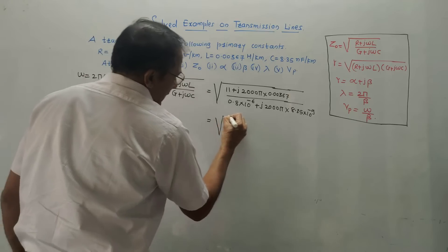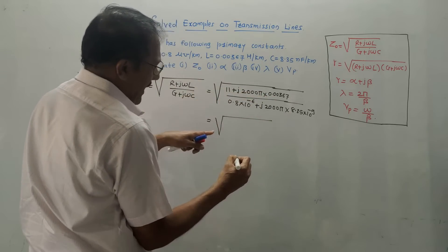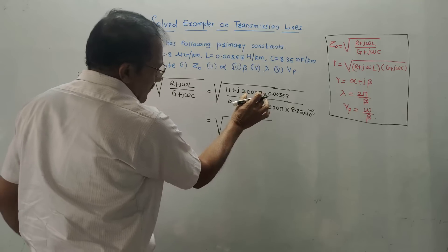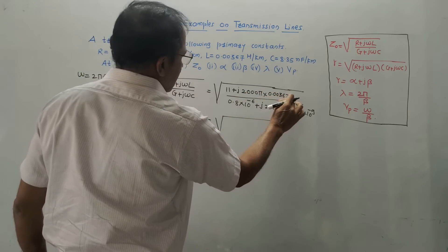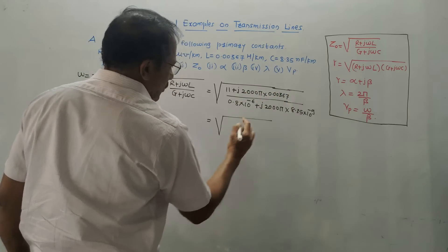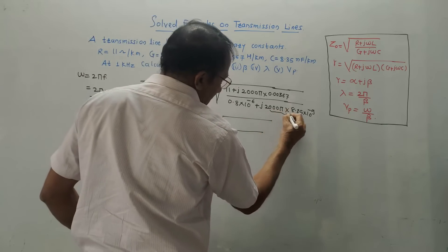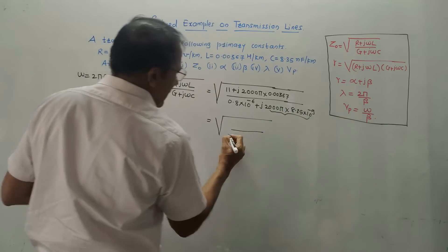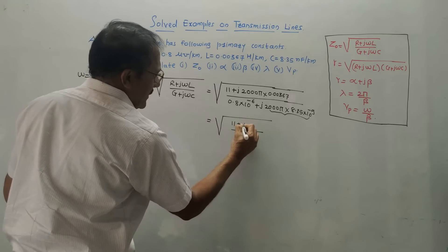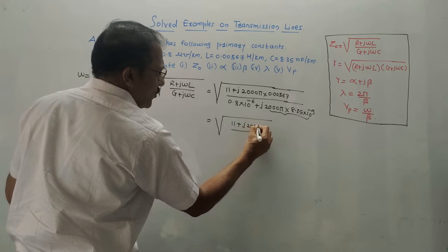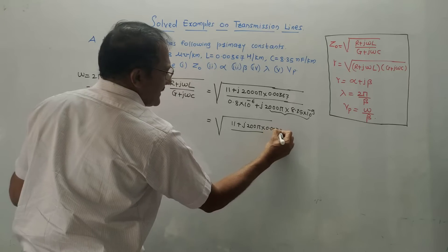Simply keep the numerator term as is. You can simplify 2000π × 0.00367 and keep it in the numerator. The numerator becomes 11 + j·2000π × 0.00367. You need to simplify this — multiplying 2000π × 0.00367 gives approximately 23.06. Divided by the denominator term.